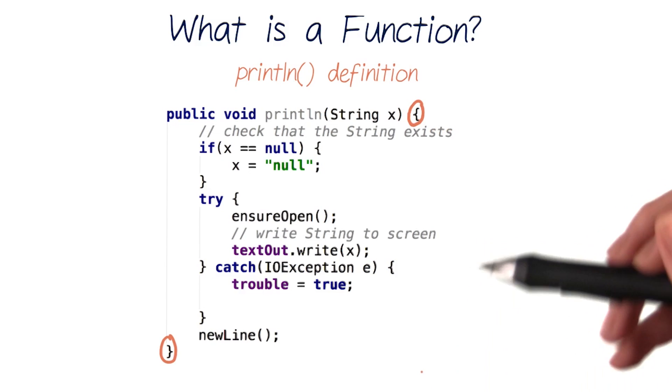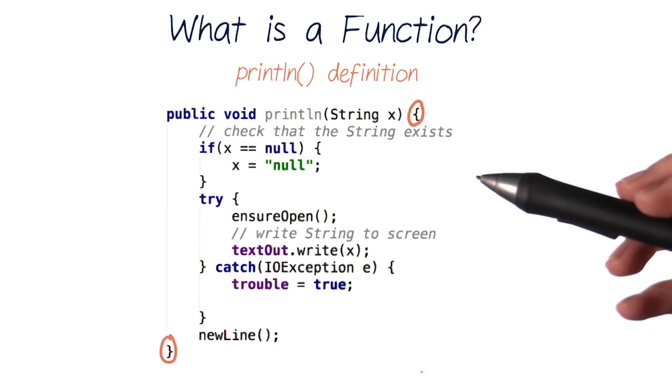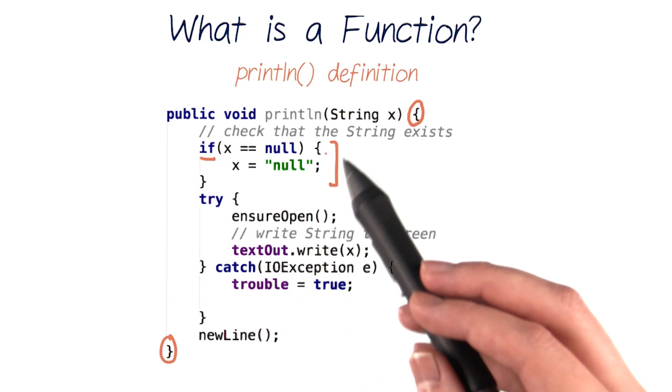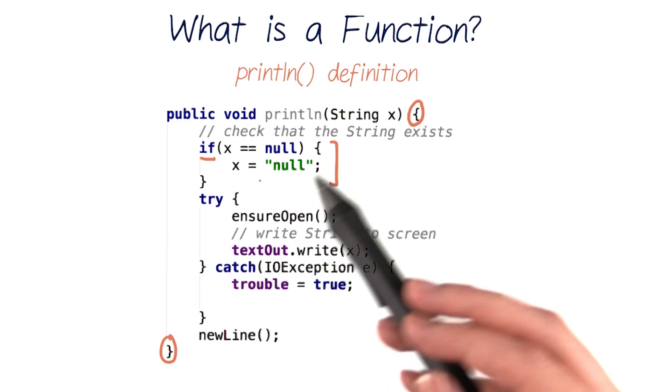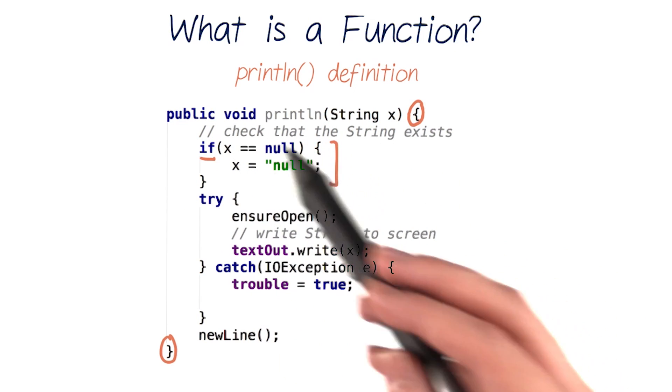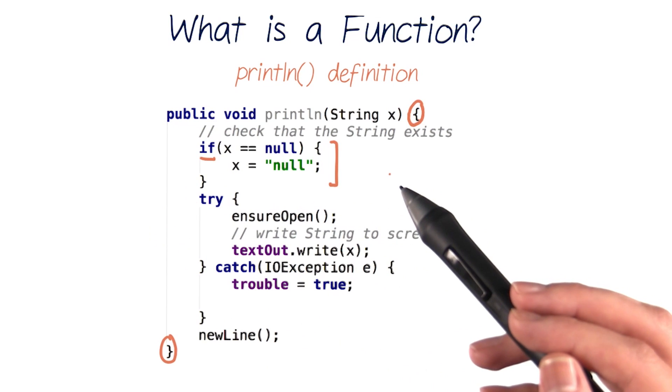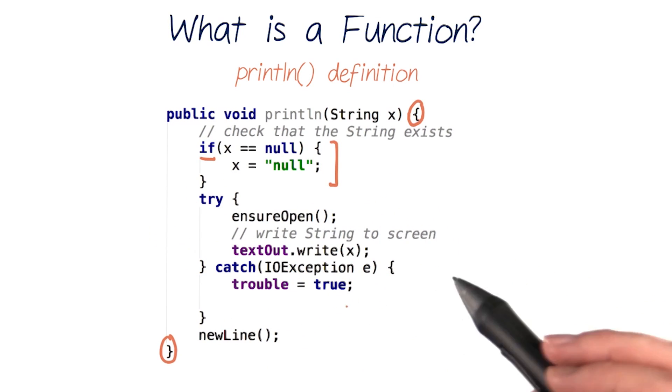This block of code is pretty big and quite complicated. Here we see an if statement that's checking if our string, x, is equal to null. Null basically means that it doesn't exist. So this checks that there is a string to print. Then there's a lot more code to correctly display the string.